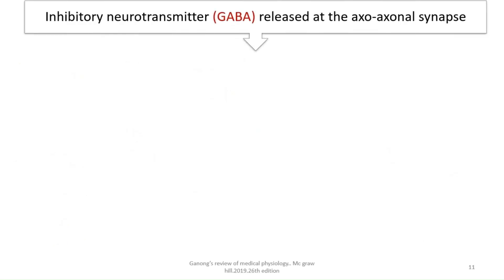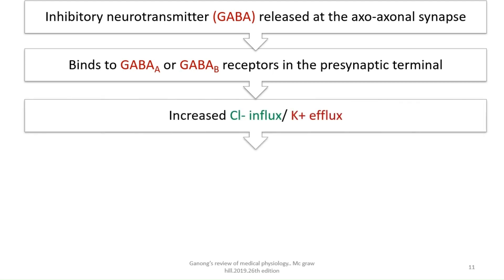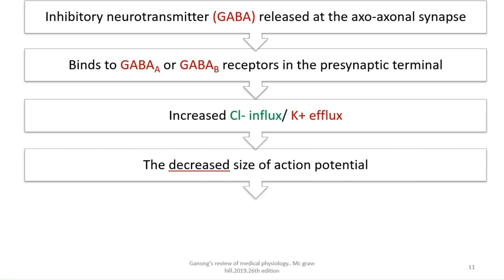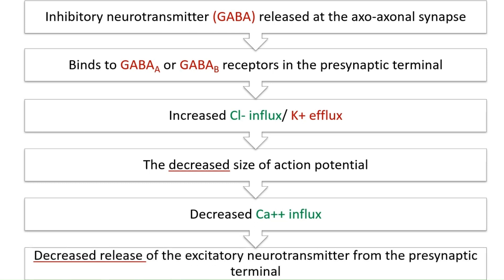In summary, when an inhibitory neurotransmitter is released at the axoaxonal synapse, it binds to GABA-A or GABA-B receptors on the presynaptic terminal, causing increased chloride influx or potassium efflux. This decreases the size of the action potential, reduces calcium influx, and thereby decreases the release of excitatory neurotransmitter from the presynaptic terminal — that is how presynaptic inhibition works.